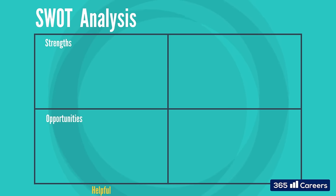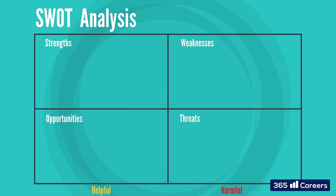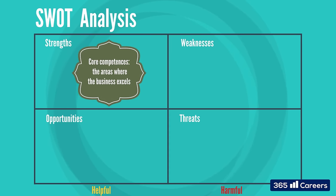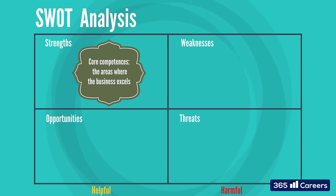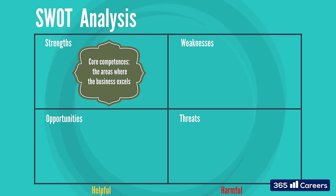The four elements of SWOT analysis are usually placed in a table which looks something like this. Internal strengths and external opportunities are vertically paired as helpful elements, while internal weaknesses and external threats are paired as harmful elements. So, if we perform a company analysis, under strengths we would expect to see its core competences — the areas where the business excels and has a competitive advantage over competitors. An example of a firm's strength could be its strong brand recognition.